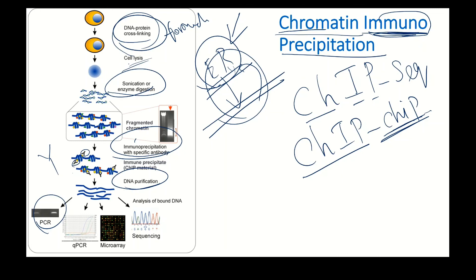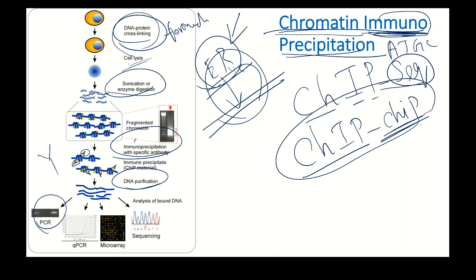For example, to find where a transcription factor binds to DNA, chromatin immunoprecipitation is used. You can determine the exact sequence (A, T, G, C) of that DNA region. If you want to simultaneously identify multiple transcription factor binding regions, you go for microarray — ChIP-chip — because microarray can simultaneously identify multiple regions.